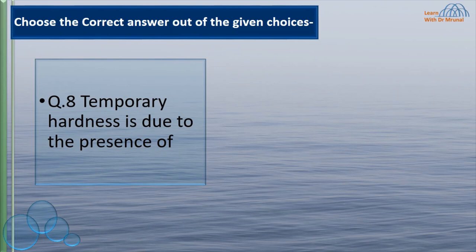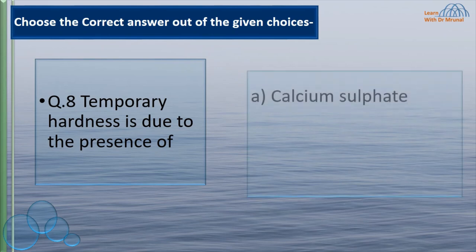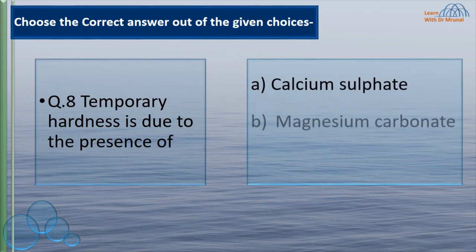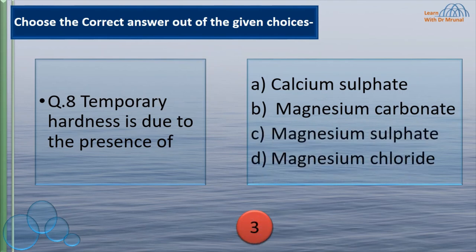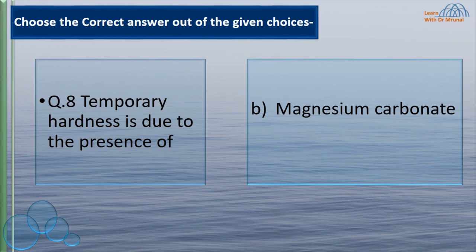Temporary hardness is due to the presence of: calcium sulfate, magnesium carbonate, magnesium sulfate, magnesium chloride. Calcium sulfate and magnesium sulfate are responsible for permanent hardness. Magnesium carbonate is the correct answer — magnesium carbonate is responsible for temporary hardness. Temporary hardness is also called carbonate hardness.